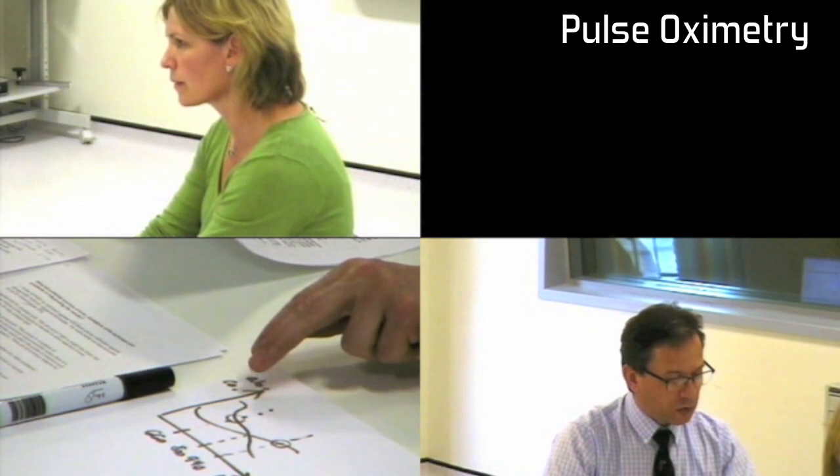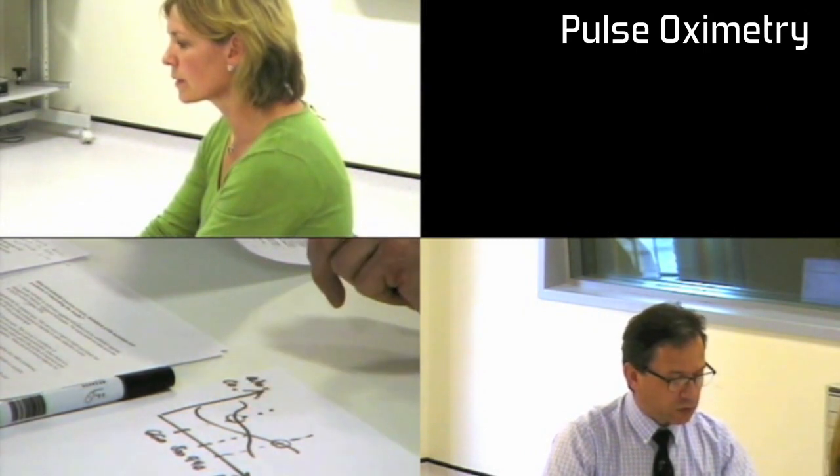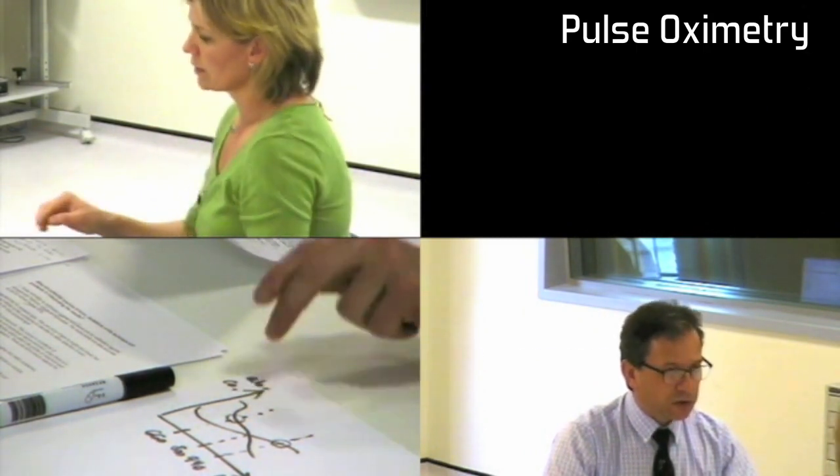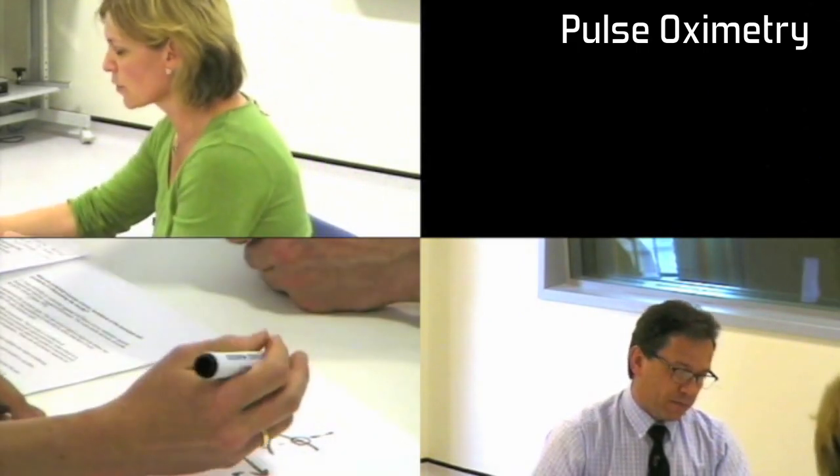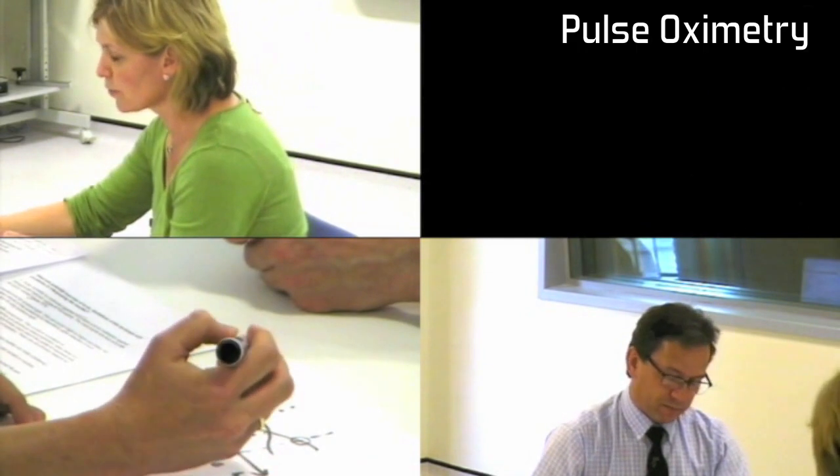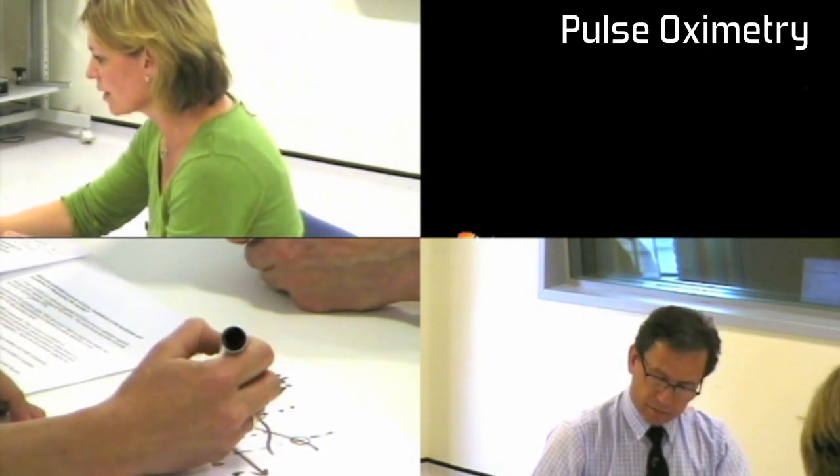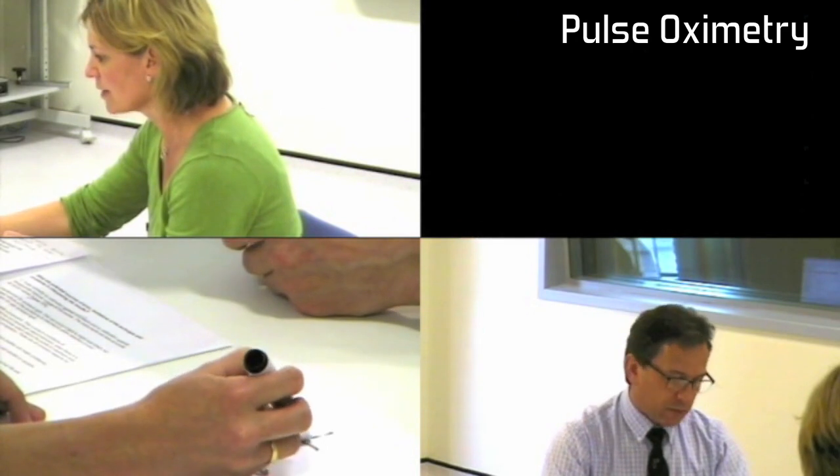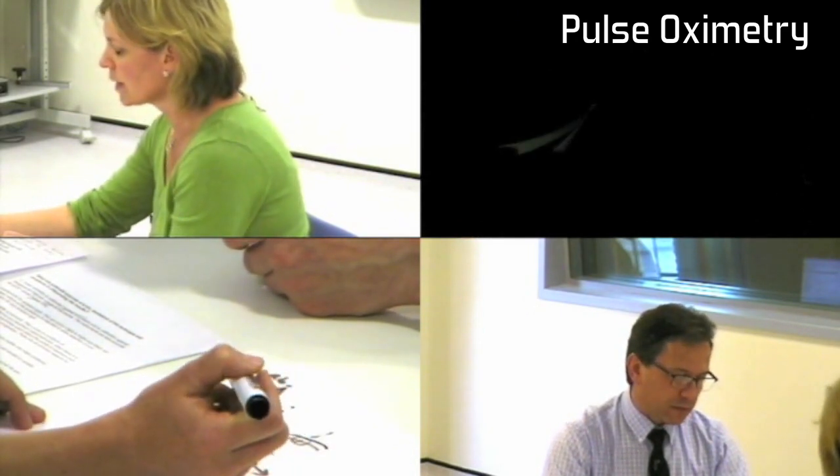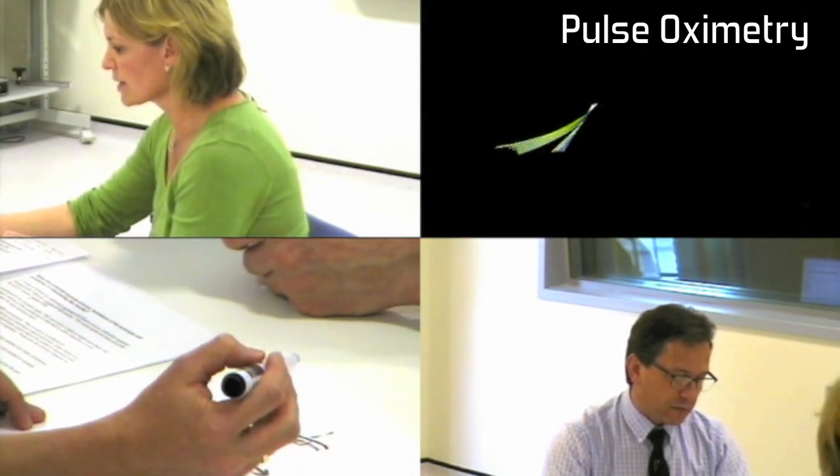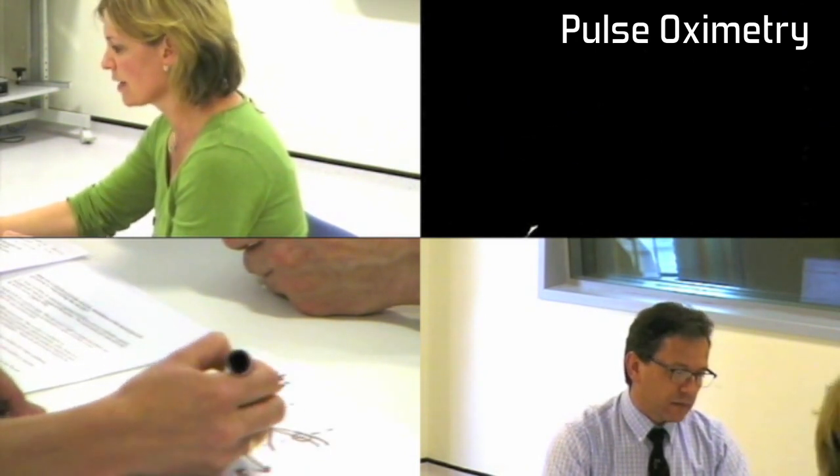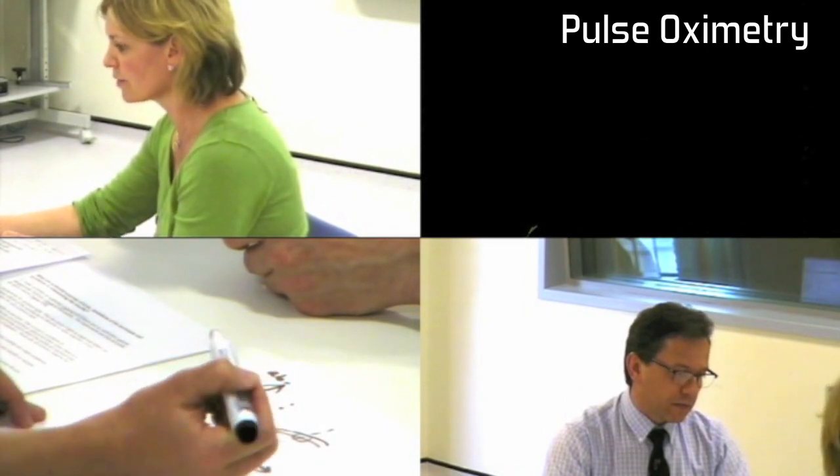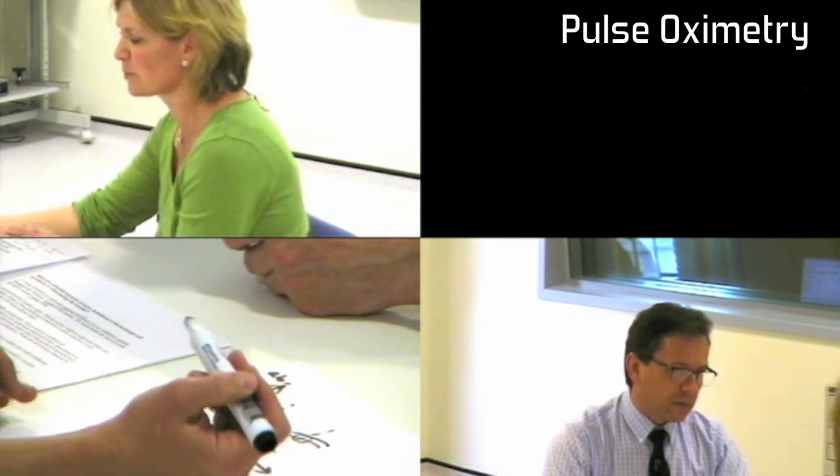Can you put the carboxyhemoglobin and methemoglobin absorption on this graph? Carboxyhemoglobin is similar to oxyhemoglobin, so I would imagine it's somewhere along that line as well. Methemoglobin absorbs equally at both wavelengths. I'm just not entirely sure where along the graph it would lie, so I would just be guessing.